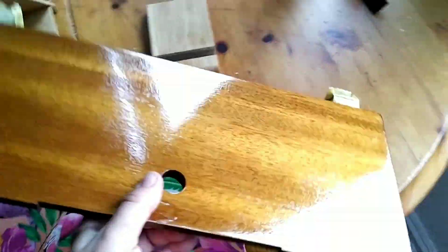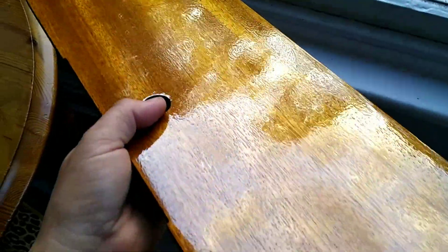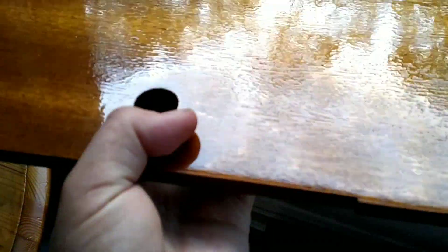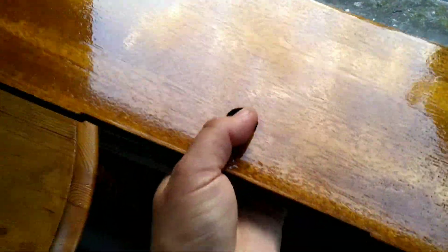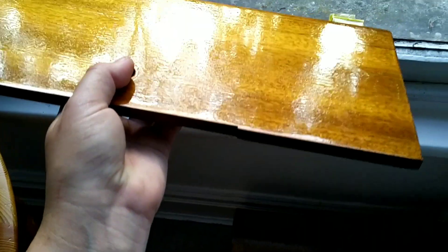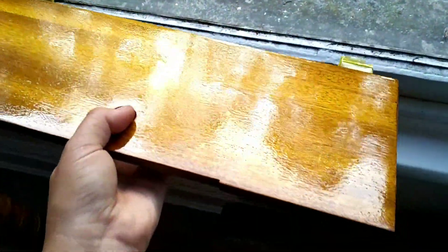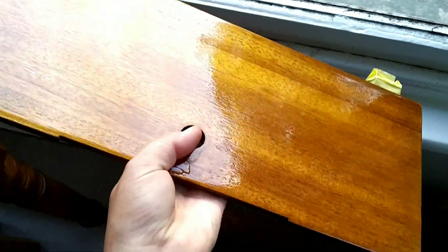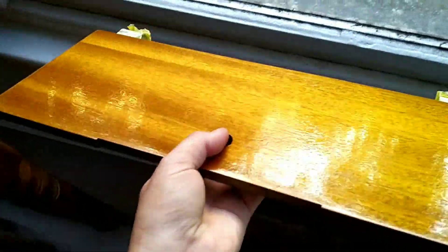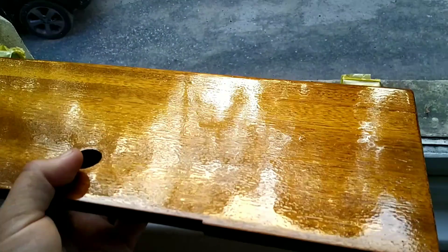This is eight coats of spray varnish and it's still a little bit mottled, so I'm going to go for 800 grit down to 1200 and I'm going to go two more coats and that will be it.